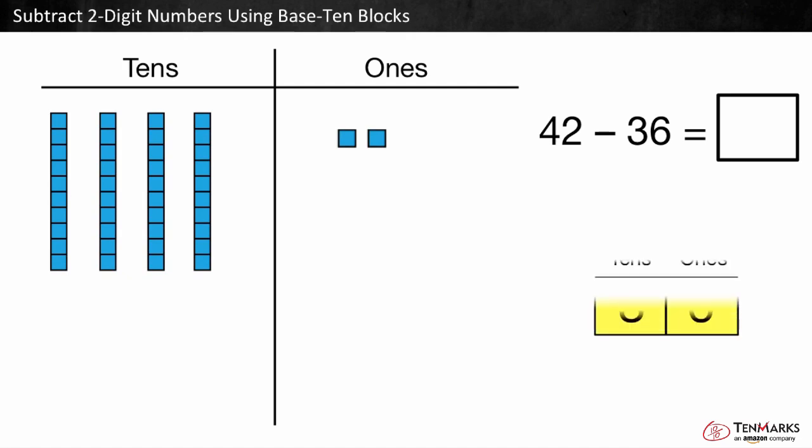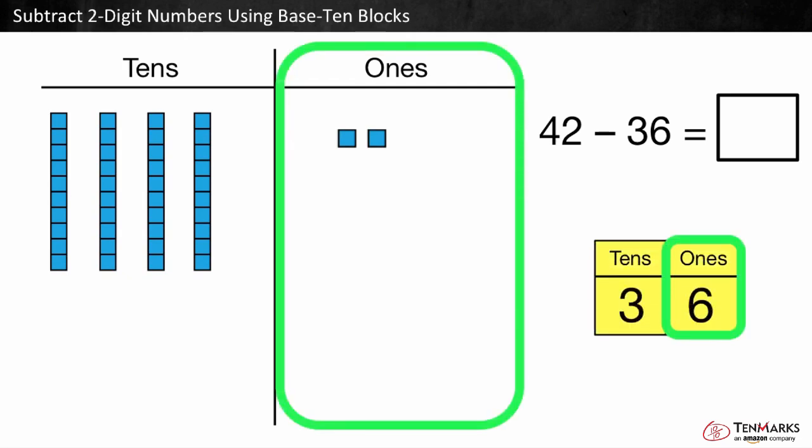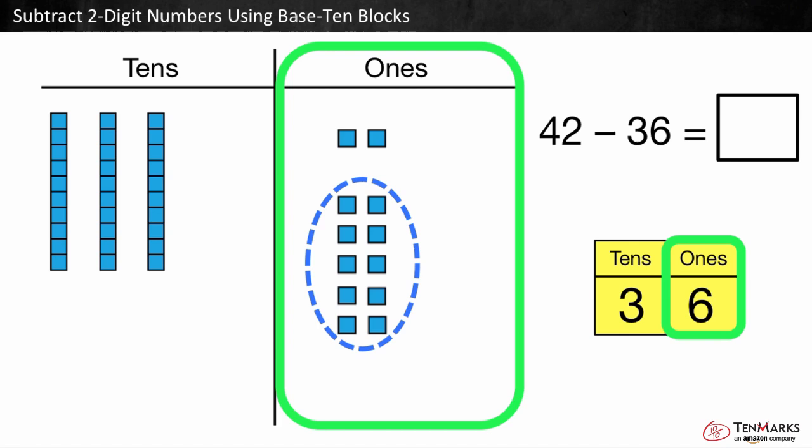Start by subtracting the 1s. Can we take six 1s away from two 1s? No, there are not enough 1s. We can trade one 10 for 10 1s. Now there are six 1s left.